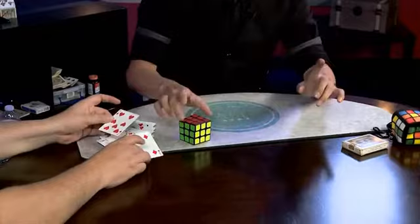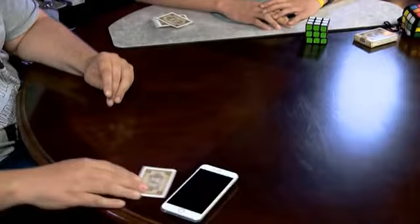And there's a Rubik's Cube solved. So, you have the Ace of Hearts underneath your phone. Boom.